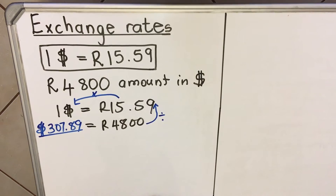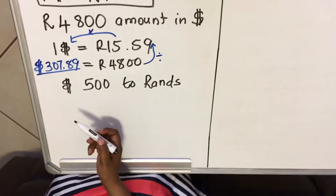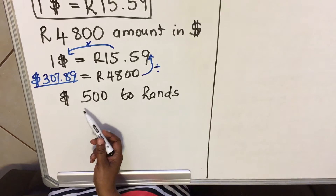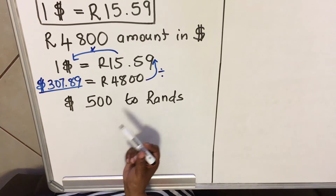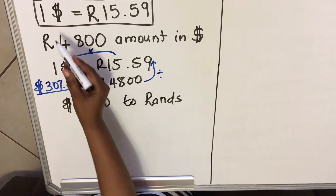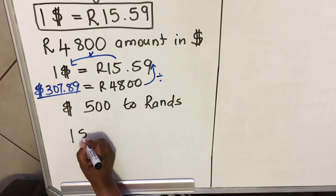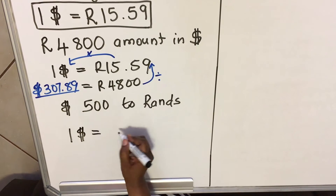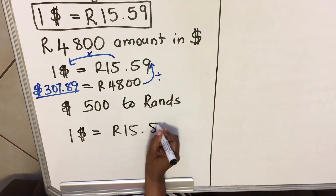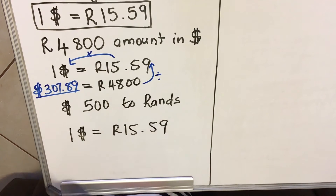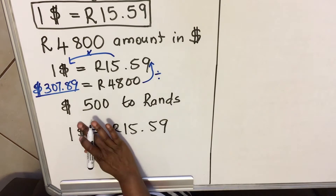Now let's look at another example where you are given dollars and changing them to rand. Our second example: we have 500 dollars and we are asked to change them to rand. You write the exchange rate: one dollar equals 15 rand 59 cents. And since you have dollars, you write 500 dollars.